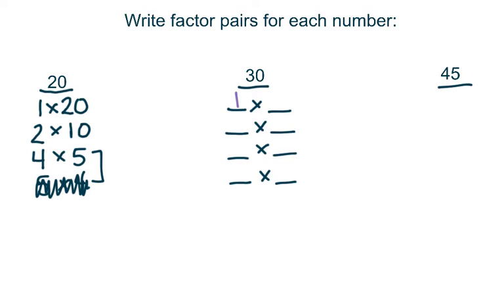For thirty. Yeah, let's start with one times itself. Two times fifteen. Three times ten. And five times six. And if you kept going, six times five would be your turnaround fact.